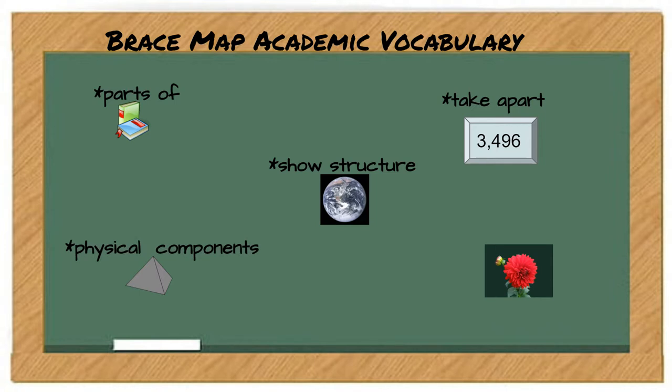Your essential question may ask for the physical components, for example, of that geometric figure. And lastly, your essential question may ask you for the anatomy of something, like the anatomy of a flower, the parts of a flower.